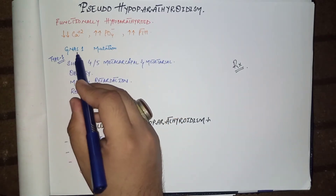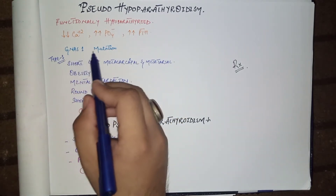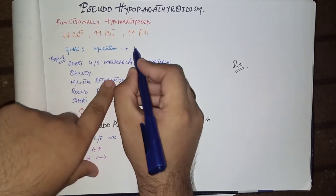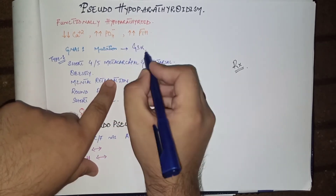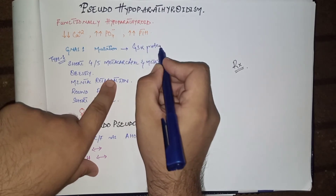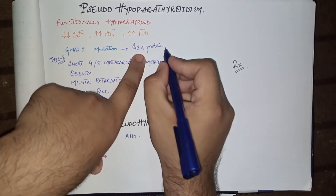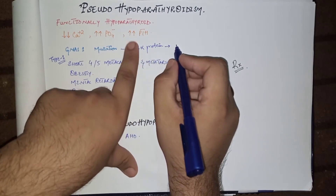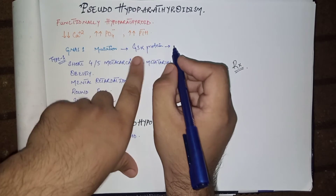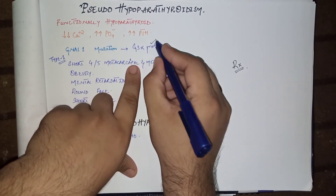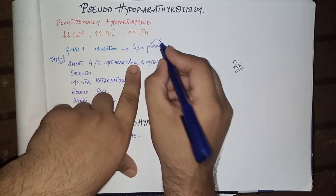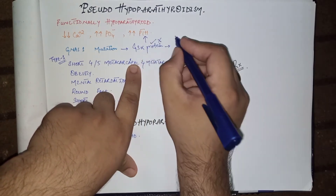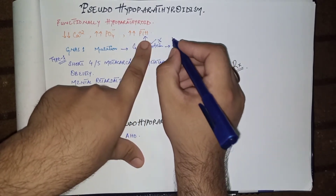The problem here is a GNAS1 mutation. This is a gene responsible for the G-stimulatory alpha protein, which encodes the G-stimulatory alpha protein responsible for the signal transduction pathway in the production of parathyroid hormone. Due to a defect in this G-stimulatory alpha protein, there is overproduction of parathyroid hormone.